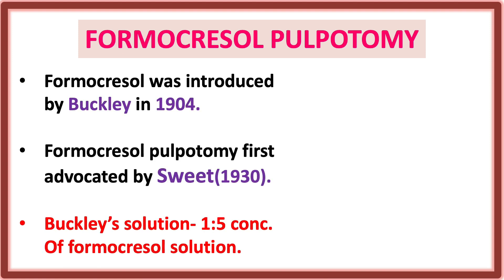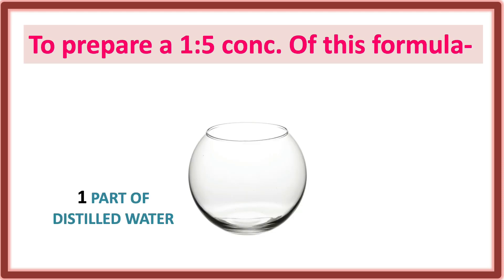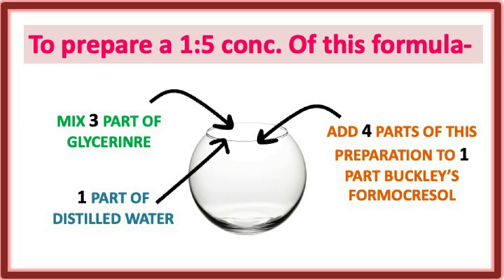The most common pulpotomy performed nowadays is formocresol pulpotomy. Formocresol was introduced by Buckley in 1904 and first advocated by Sweet. Buckley's solution is a 1:5 concentration of formocresol solution. Formocresol solution contains 19% formaldehyde, 35% cresol, and 15% glycerin as a vehicle. To prepare a 1:5 concentration: add one part distilled water mixed with three parts glycerin, then add four parts of this preparation to one part of Buckley's formocresol.